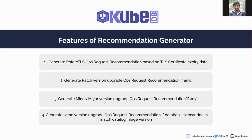One thing to note: Recommendation Generator will always suggest the minimum version update for both patch and major or minor versions. For example, if 1.0.1 and 1.0.2 are two patch versions available for a database with current version 1.0.0, Recommendation Generator will recommend upgrading to 1.0.1. Recommendation Generator also generates a same-version update recommendation if it finds that a latest or updated version is available for database catalog items. When this same-version update recommendation is executed, it will generate a same-version update ops request to upgrade the database catalog items with the latest or updated versions.